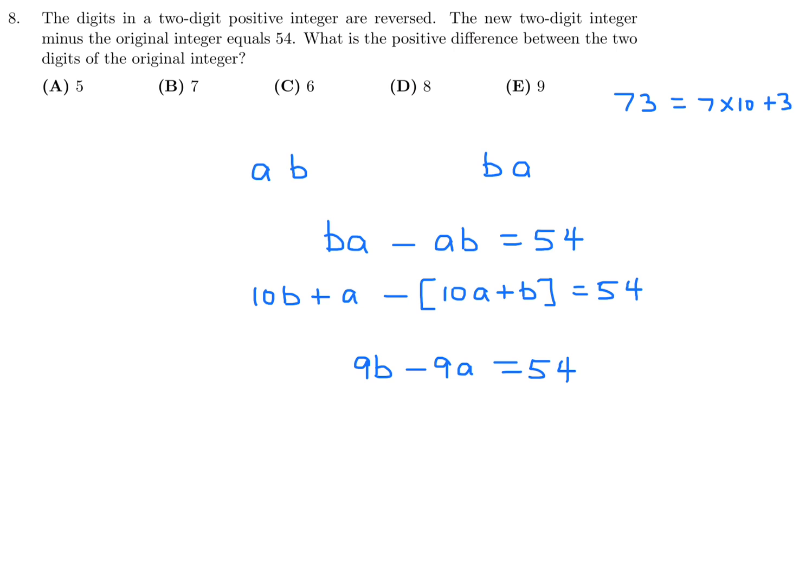Factor out the 9 and get b minus a equals 54, then divide through by 9 and get b minus a is equal to 6. What did they want? The positive difference between the two digits of the original number. The positive difference would be a minus b with an absolute value, and that looks to me like 6. 6 is a positive number and that's the answer. Number 8, that would be C.